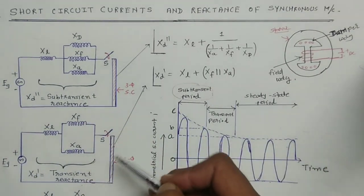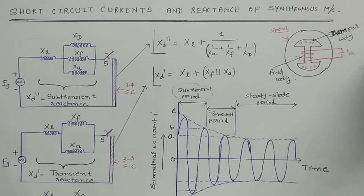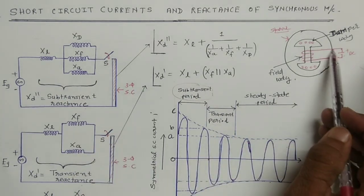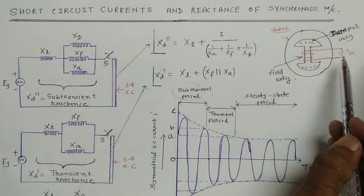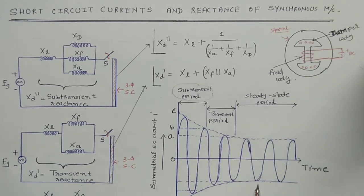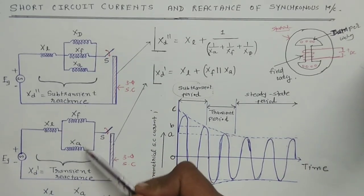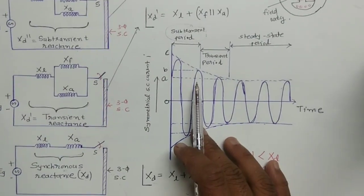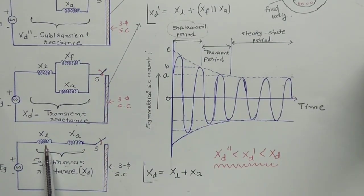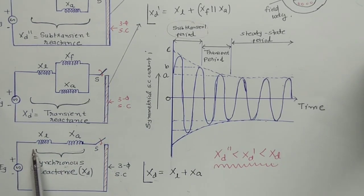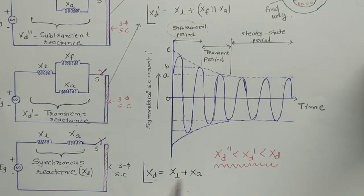This transient reactance is present for 5 to 10 cycles. After 5 to 10 cycles, the field winding current decays so that the field winding becomes open circuit and XF becomes zero. So leakage reactance and armature reactance are connected in series, and the total reactance is given by synchronous reactance XD, where XD equals XL plus XA.